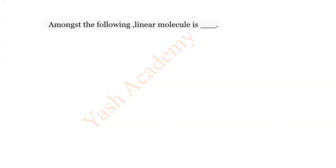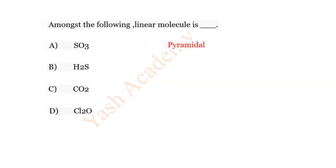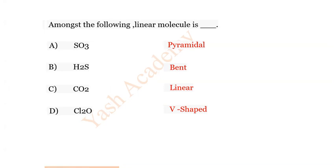Question 23: Among the following, which is a linear molecule? Options: A) SO₃, B) H₂S, C) CO₂, D) Cl₂O. SO₃ is pyramidal, H₂S is bent, CO₂ is linear, Cl₂O is V-shaped. The correct answer is C) CO₂.